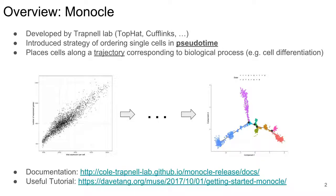So let's see what Monocle is. Monocle is an R package developed by the Trapnell Lab — the same lab that developed TopHat and Cufflinks, as you've probably heard of before.